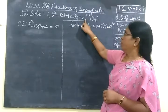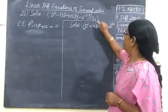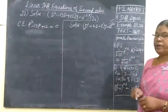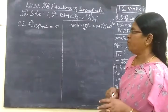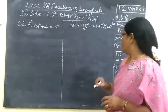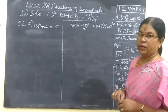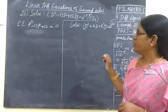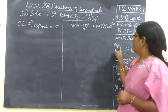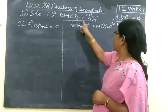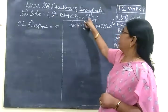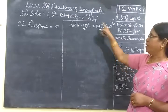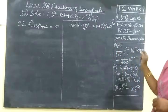Now we find e power alpha x. Here also e power alpha x. So further you are finding the particular integral. In the last class we have seen only the complementary function. Now we are seeing the particular integral. The solution y equals complementary function plus particular integral. We have to find the particular integral only when the right hand side is e power alpha x. For that case only we are finding the particular integral.